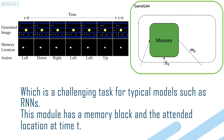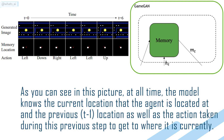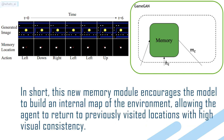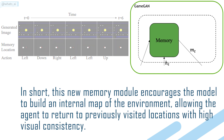This module has a memory block and the attended location at time t. As you can see in this picture, at all times the model knows the current location the agent is at, the previous t-1 location, as well as the action taken during that previous step to get to where it is currently. In short, this new memory module encourages the model to build an internal map of the environment, allowing the agent to return to previously visited locations with high visual consistency.